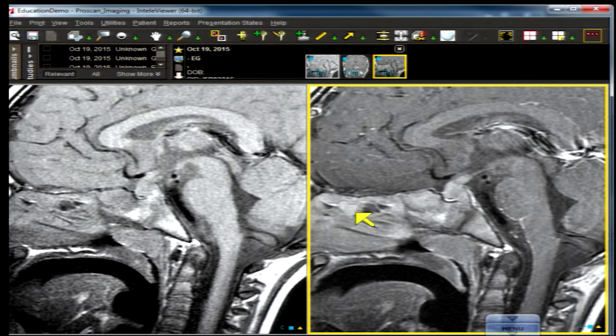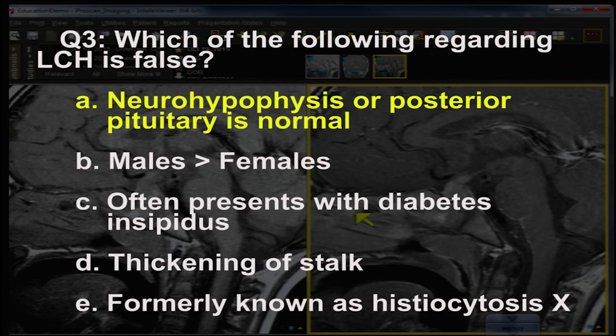Question number three: which of the following regarding LCH is false? The correct answer is a tough one — 'the neurohypophysis or posterior pituitary gland is normal.' That is not the case. In fact, the majority of individuals with LCH may be missing the posterior pituitary bright spot.